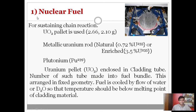The first component is nuclear fuel — one of the most important components in a nuclear reactor, used for sustaining chain reactions. Normally, UO₂ (uranium dioxide) pellets are used, having a mass of 2.66 grams or 2.10 grams. In some nuclear reactors, metallic uranium rods are used.